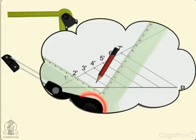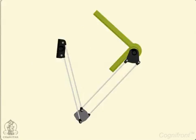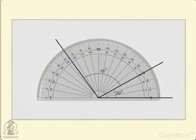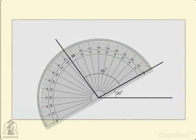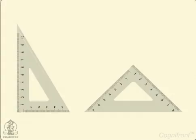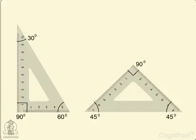Protractor is used to measure and lay out angles. Another tool is set squares, also known as triangles. They come in flavors of 30-60-90 degrees and 45-45-90 degrees.